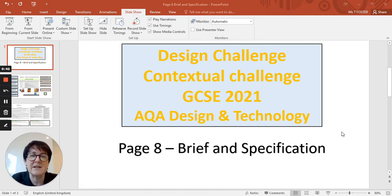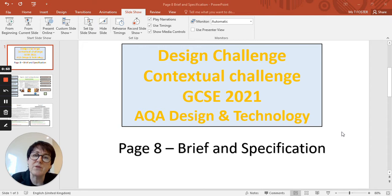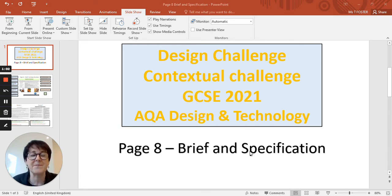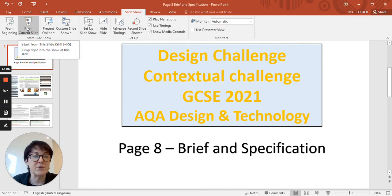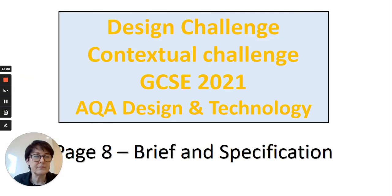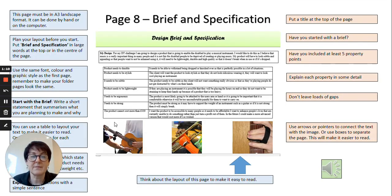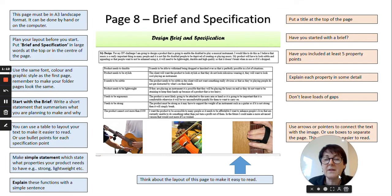You need to have a really good understanding of who your target market is and who the client is that you're producing for. You need to have looked at other products so you've got a good understanding of what is already successfully selling in this topic. You also need to have done some research into the topic itself so that you understand the needs and the possibilities of where design can be created. So, brief and specification — let's have a look at some examples.